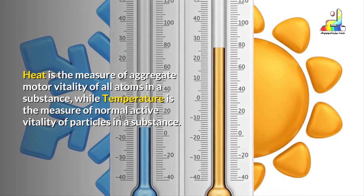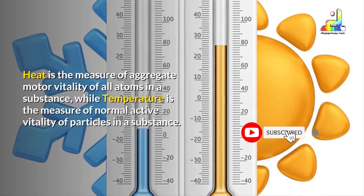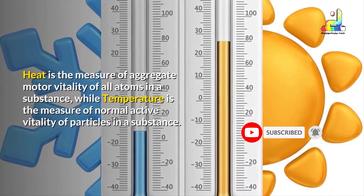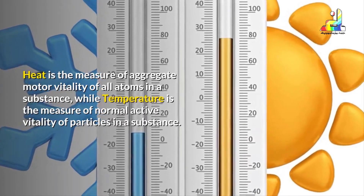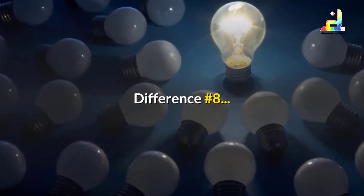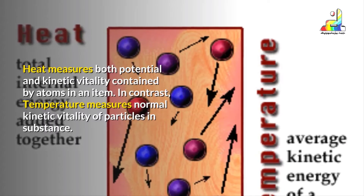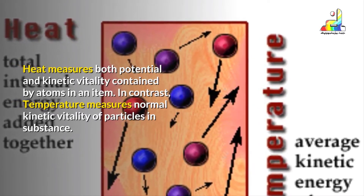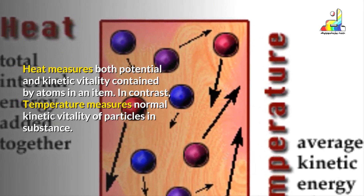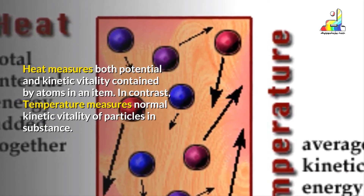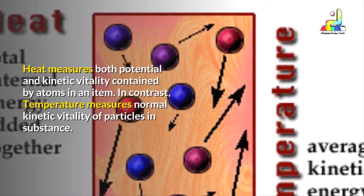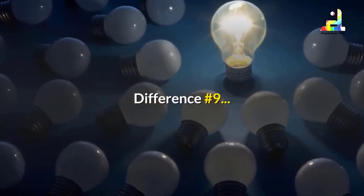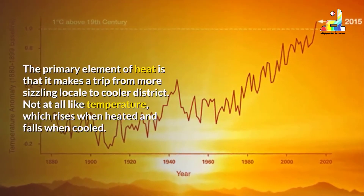Difference number seven: heat is the measure of the total kinetic energy of all atoms in a substance, while temperature is the measure of the average kinetic energy of particles in a substance. Difference number eight: heat measures both potential and kinetic energy contained by atoms in an object, whereas temperature measures only the average kinetic energy of particles.